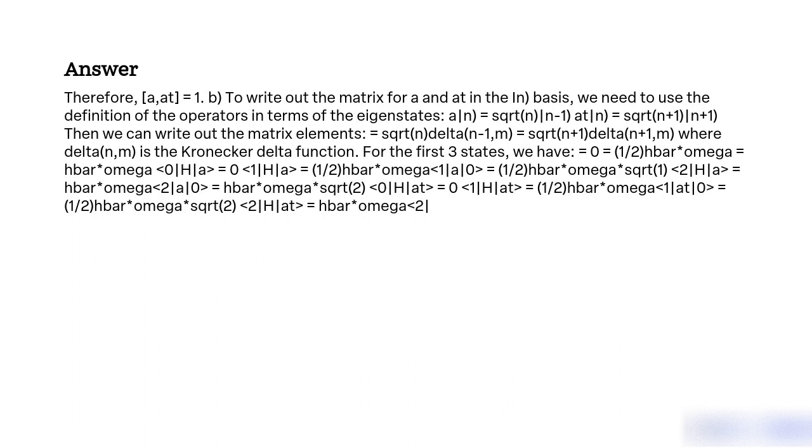Part B: To write out the matrix for a and a† in the |n⟩ basis, we need to use the definition of the operators in terms of the eigenstates: a|n⟩ = √n|n-1⟩ and a†|n⟩ = √(n+1)|n+1⟩. Then we can write out the matrix elements: ⟨m|a|n⟩ = √n δ(m,n-1) and ⟨m|a†|n⟩ = √(n+1) δ(m,n+1), where δ(n,m) is the Kronecker delta function.